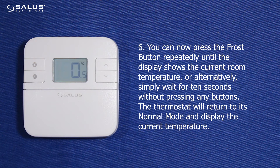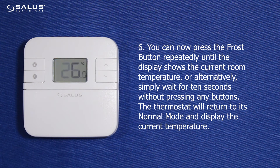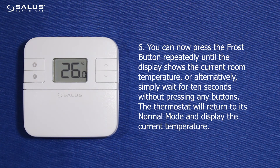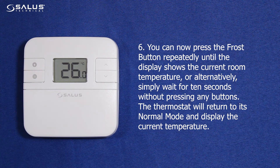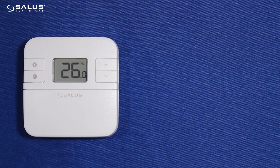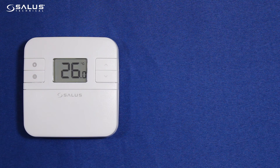Step 5: You can now press the frost button repeatedly until the display shows the current room temperature, or alternatively, simply wait for 10 seconds without pressing any buttons. The thermostat will return to its normal mode and display the current temperature. This concludes the procedure for setting the temperature display increments.